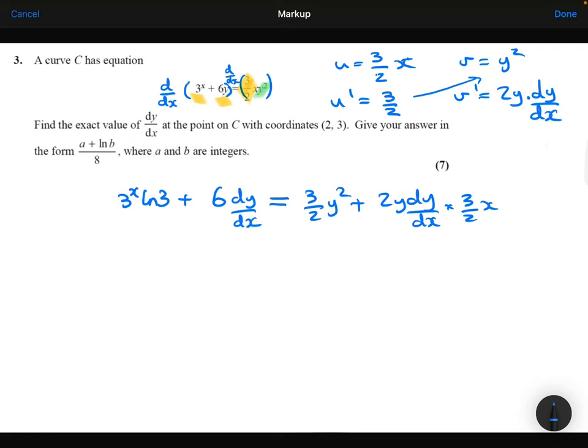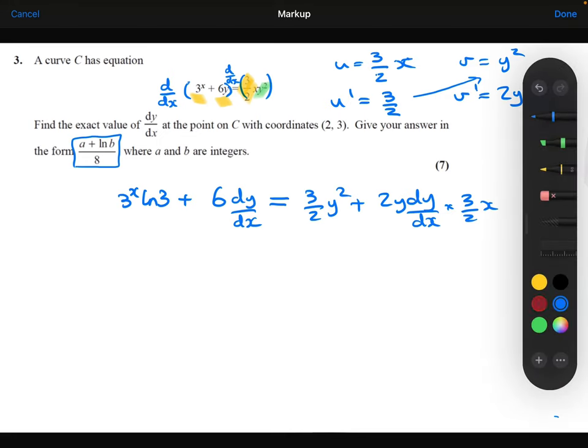Right, I need to find the exact value of this expression at the coordinates (2, 3). So at this stage, I'm going to substitute the 2 and the 3 in, and then I'm going to try and rearrange to get dy/dx. So x is 2, y is 3. So I'll get 3²·ln 3 + 6·dy/dx = (3/2)·3² + 2·3·dy/dx·(3/2)·2.